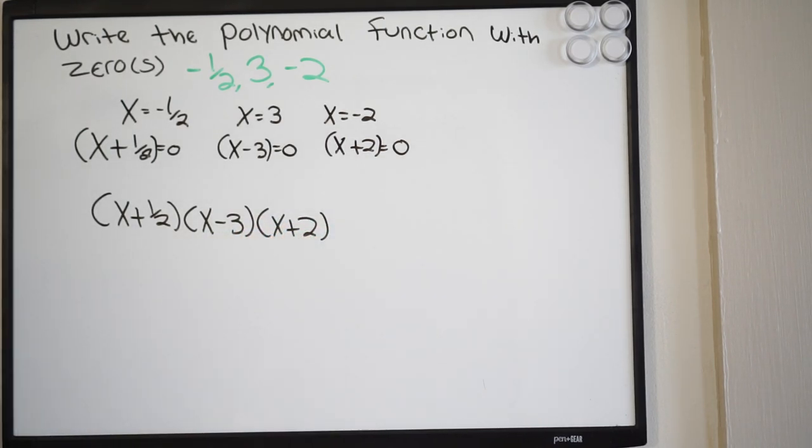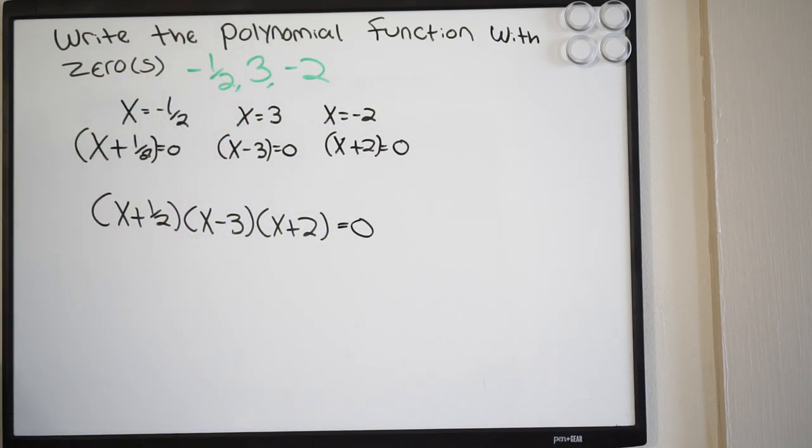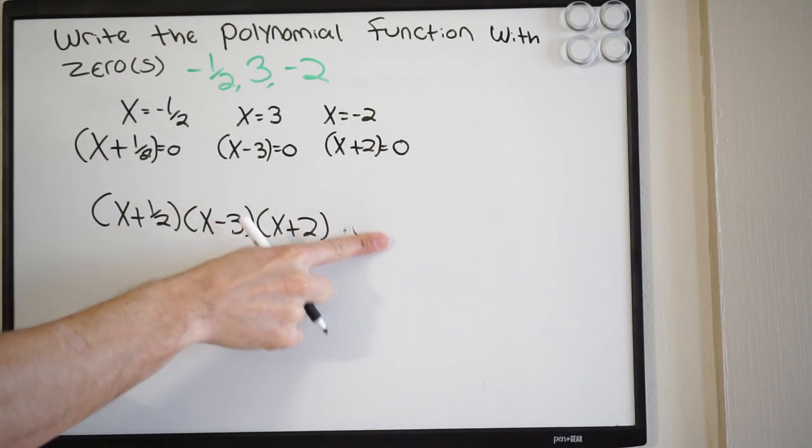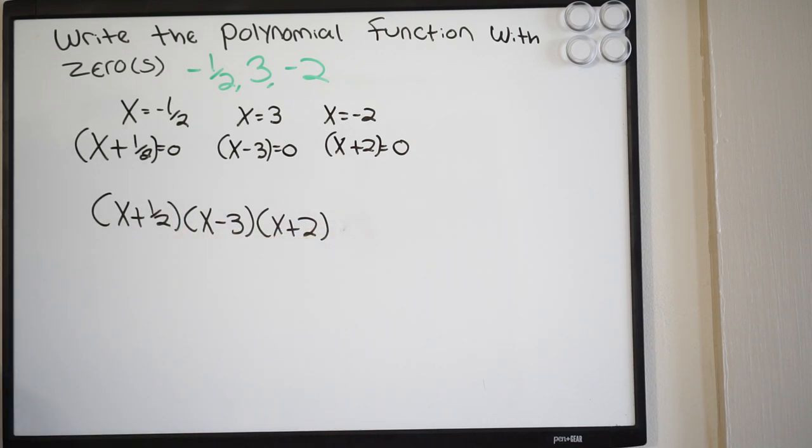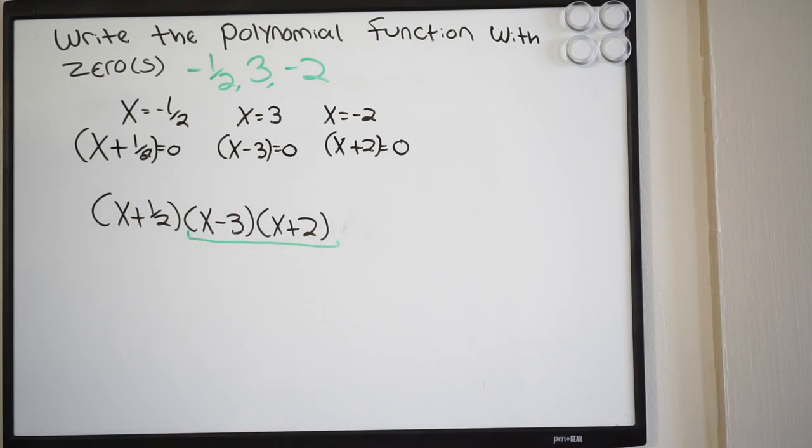So this looks very familiar when we're solving for the zeros. This would be equal to zero, we take our factors and we solve and we get the zeros. But again, we're going in reverse now. So we want to expand this out. When we're going to do that, I'm going to look at these last two factors right here and expand these out first, and then we'll work on this.